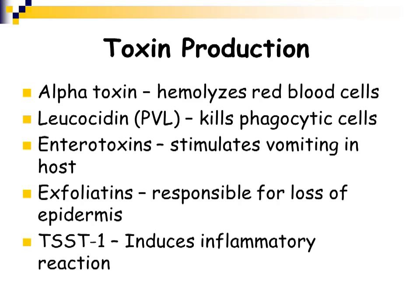Staphylococcus aureus produces many toxins. It produces alpha toxin, which hemolyzes red blood cells and gives its hemolytic reaction on sheep blood agar plates. It produces leukocidin, also called PVL or Panton-Valentine leukocidin, which kills phagocytic cells so it cannot be engulfed by those phagocytes. It produces an enterotoxin — entero meaning enteric or intestinal — which will stimulate vomiting and diarrhea in the host. It can produce exfoliatins, which cause loss of the epidermis of the skin. And one of the more potent toxins is TSST-1, or Toxic Shock Syndrome Toxin 1, which induces a very severe inflammatory reaction.